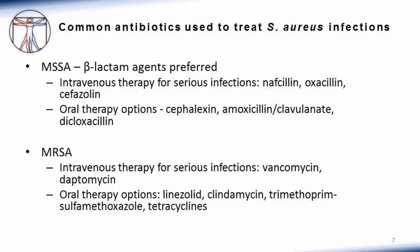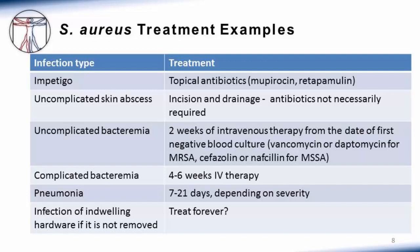All of those MSSA options are beta-lactams. For MRSA, beta-lactams are generally not an option, with the exception of a couple of newer cephalosporins. For serious MRSA infections requiring intravenous therapy, the two mainstays are vancomycin and daptomycin. For oral MRSA therapy, options include linezolid, clindamycin, trimethoprim-sulfamethoxazole, or the tetracyclines. For impetigo — an infection of the superficial dermis only — topical antibiotics such as mupirocin may be adequate, and those patients may not even require systemic therapy.